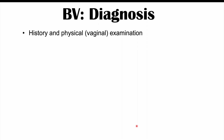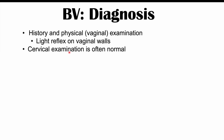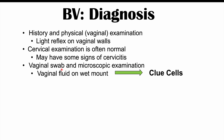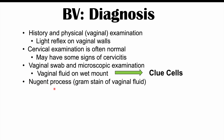BV is diagnosed clinically through history and physical examination. History, especially those risk factors discussed, is important in making the diagnosis. On vaginal examination, there can be light reflex on the vaginal walls; cervical examination is often normal, though there may be some signs of cervicitis. A vaginal swab of the discharge examined under a microscope is key. Vaginal fluid on a wet mount will show clue cells — epithelial cells that look fuzzy because bacteria are adhering to them.